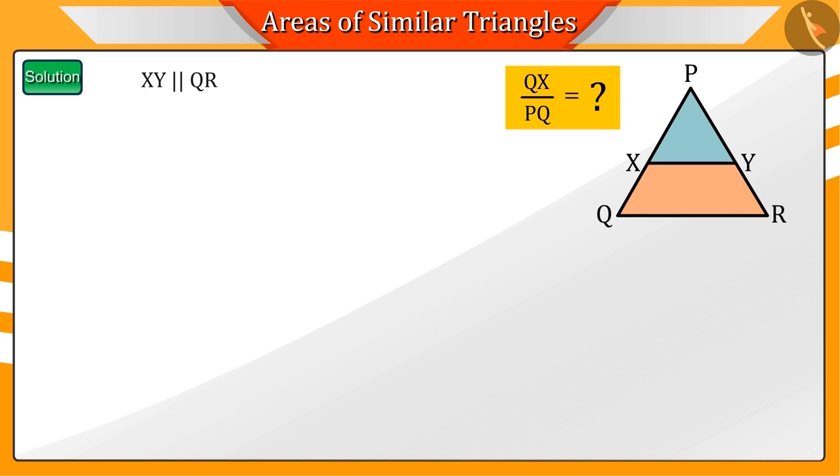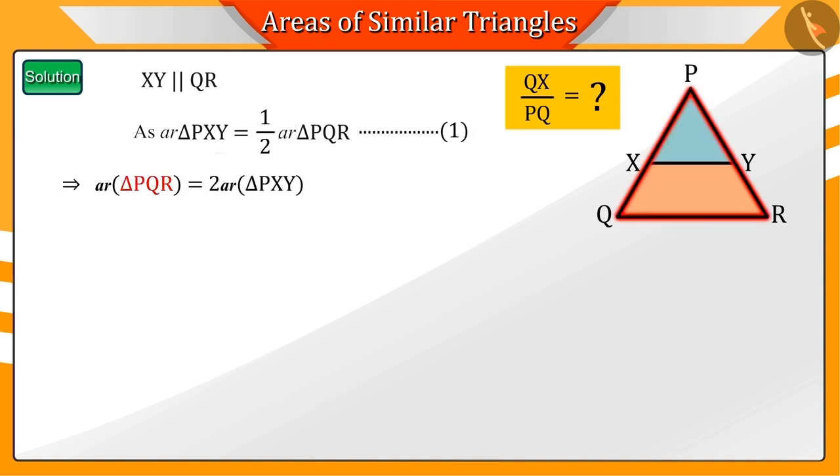According to the question, we know that XY is parallel to QR and the area of triangle PXY is half the area of triangle PQR. Hence, from equation 1, we can say that the area of triangle PQR will be twice the area of triangle PXY.